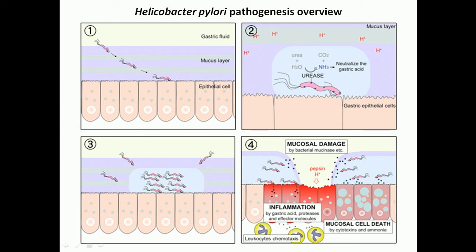Once adhesion is completed, the bacteria wants to minimize the acidity of the stomach content, because inside the stomach there are acid-secreting cells. This Helicobacter pylori must neutralize the acid, and it does so by secreting alkalizing agents like ammonia. It secretes an enzyme called urease, which breaks down urea into ammonia and carbon dioxide, reducing the acidity of the stomach juice.